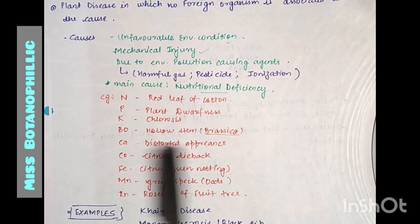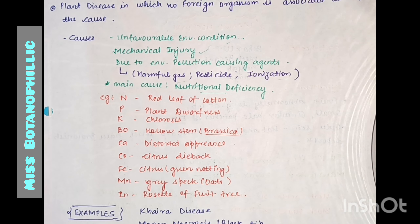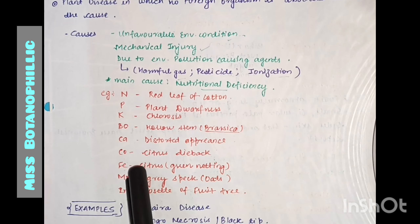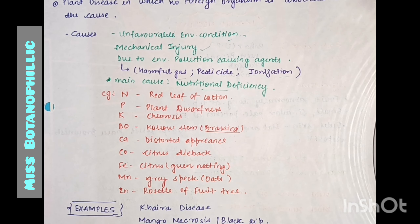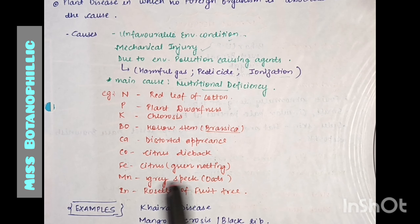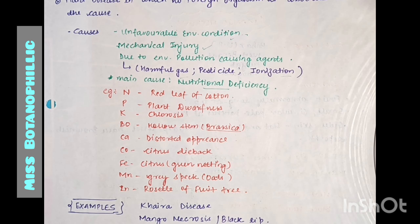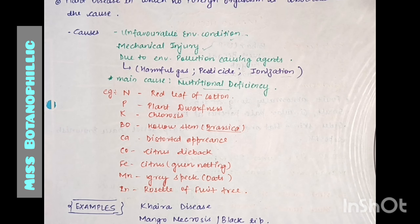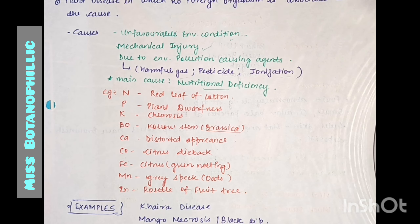Calcium deficiency causes distorted appearance, meaning the plant appearance is not normal. Cobalt deficiency causes citrus dieback disease. Iron deficiency causes green netting disease in citrus. Manganese deficiency causes gray speck of oat. Zinc deficiency causes rosette of fruit trees. No bacteria, viruses, or fungi are involved, which is why we call them non-parasitic or abiotic diseases.